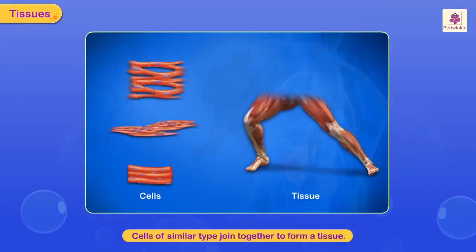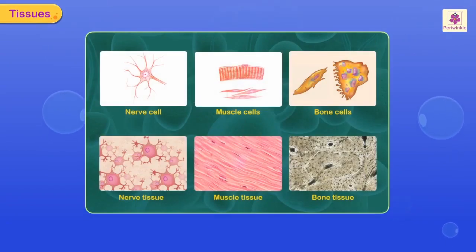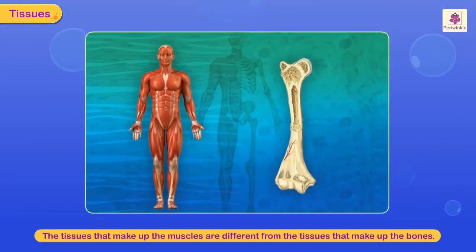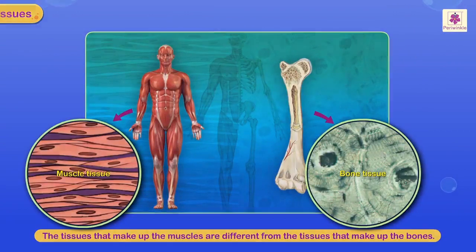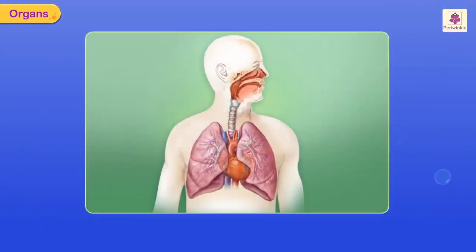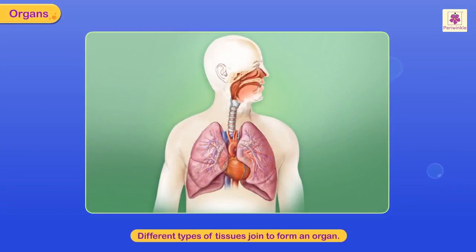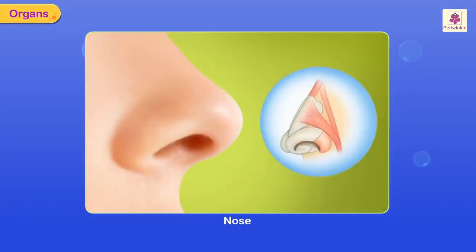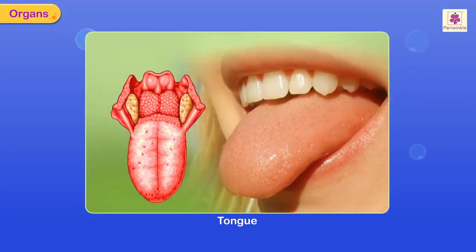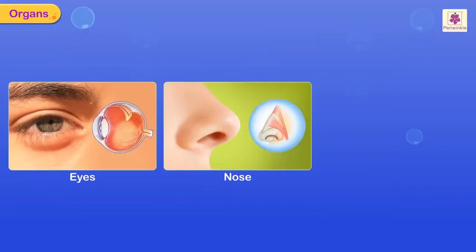Cells of similar type join together to form a tissue. There are many types of tissues based on the different types of cells they are made up of. The tissues that make up the muscles are different from the tissues that make up the bones. Different types of tissues join to form an organ — eyes, nose, and tongue are organs made up of tissues that help us to see, smell, and taste.